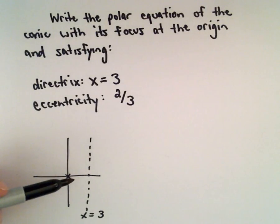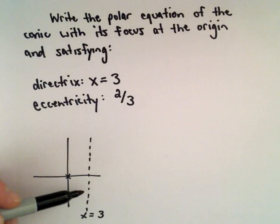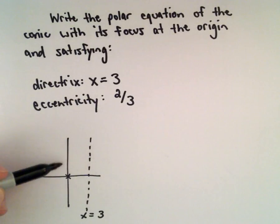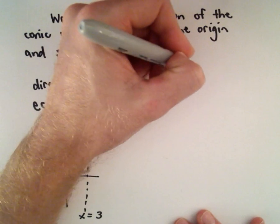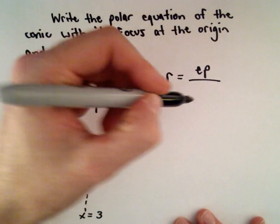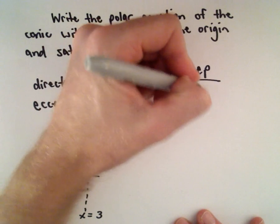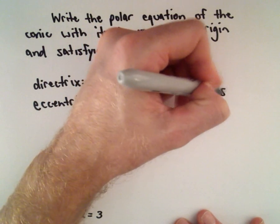Since the directrix is parallel to the y-axis and p units to the right of the y-axis, that tells me it's going to be of the form r equals ep divided by 1 plus e cosine theta.